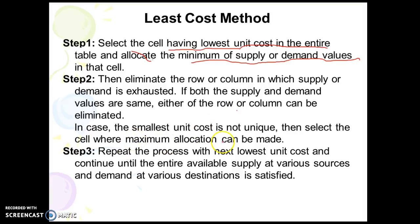If the smallest unit cost is not unique, we select the cell where the maximum allocation can be made. We continue selecting the lowest unit cost and allocating until the entire available supply at various sources and demand at various destinations is satisfied.